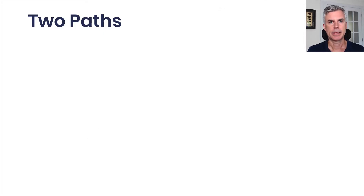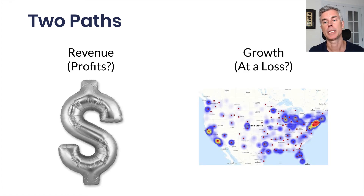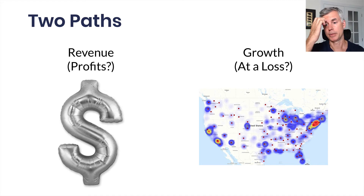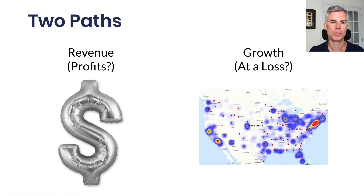This leads us to two paths to success for startups. One is revenue and profits — we're bringing in money and hopefully making money. Two is growth, potentially at a loss. Uber is a great example of growth at a loss. The founders were able to monetize and take money off the table — Travis famously sold all his Uber stock. Both of these paths work, but only one of them creates a functioning business.